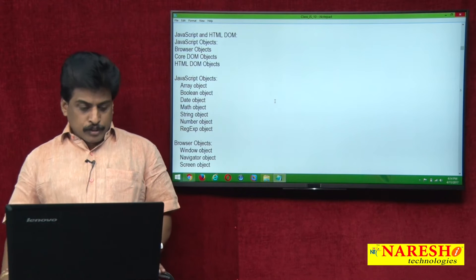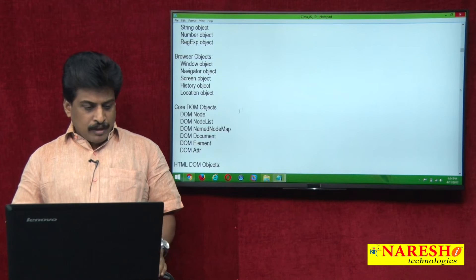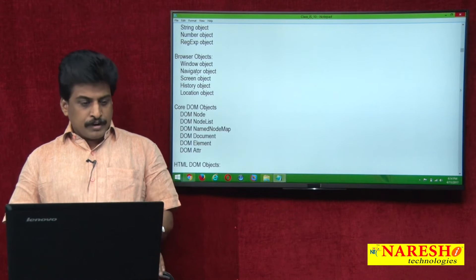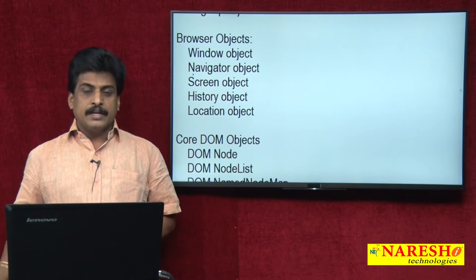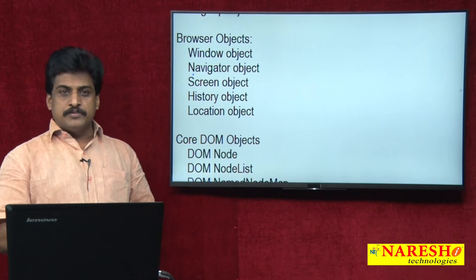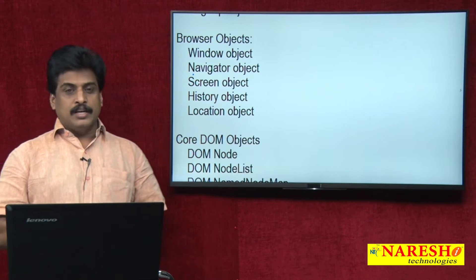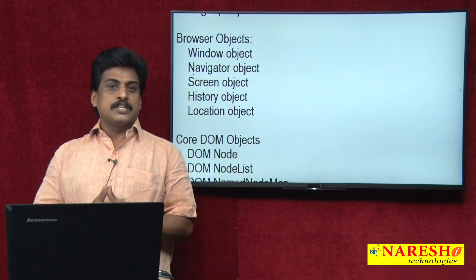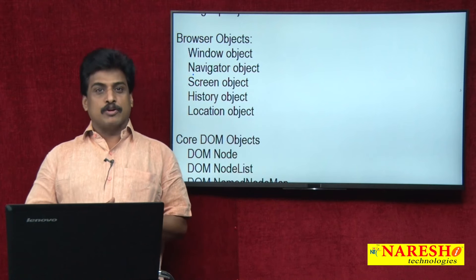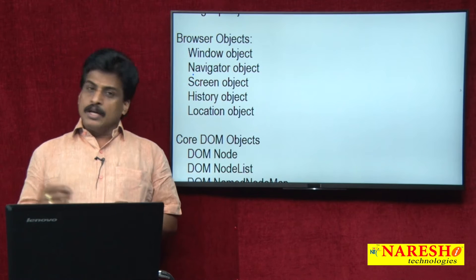If you come to browser level objects: window object, navigator object, screen object, history object, location object — a number of objects exist at the browser level.